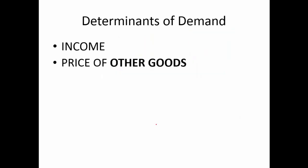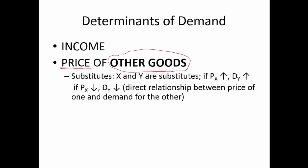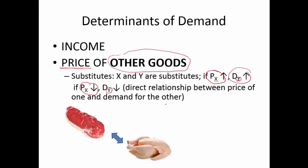Next is the price of other goods — and the key word is other goods. When the price of milk itself changed, demand didn't change; we just had a quantity change. But when the price of other goods changes, that can influence the level of demand for a particular good. This can be one of two categories. Substitutes: the price of X goes up, demand for Y goes up, because Y satisfies the same wants as X. For example, if the price of beef rises, demand for chicken rises, and vice versa.